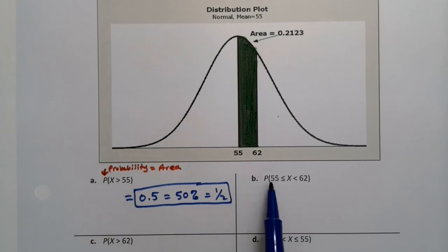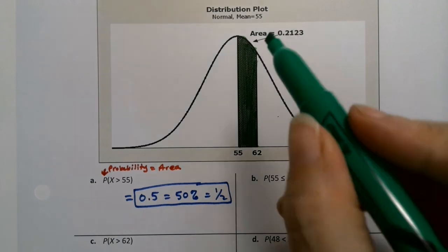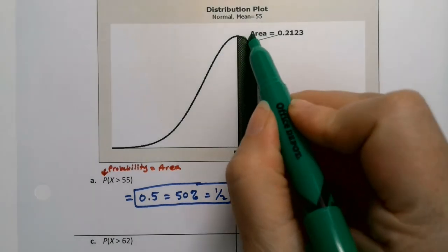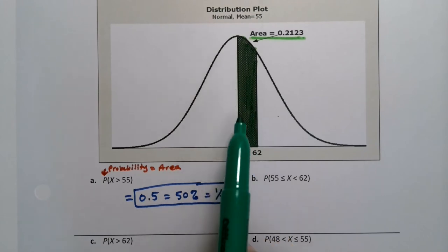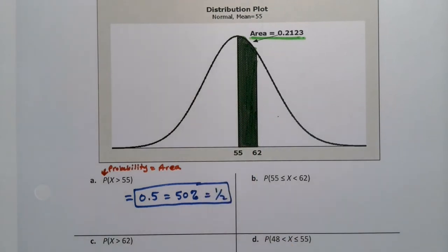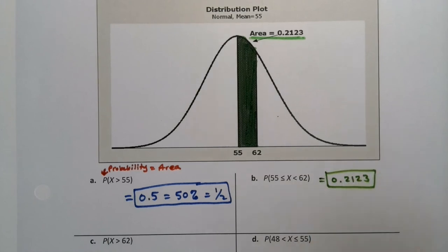Now what about the probability that 55 is less than or equal to X, which is less than 62? That's this zone that I just highlighted in green. However, it was already kind of colored in gray ahead of time. So that would be 0.2123. It's nice when they ask a question that they've already given the answer to.